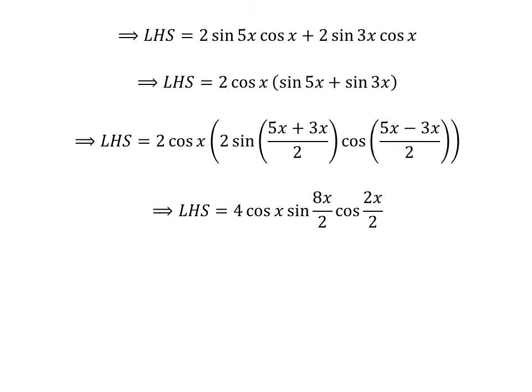Further simplification gives us the left hand side equal to 4 times cosine of x times sine of 8x/2 times cosine of 2x/2. Canceling the common factor 2 gives us 4 times cosine of x times sine of 4x times cosine of x.